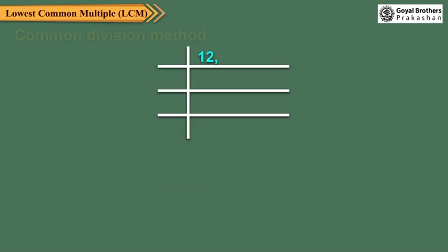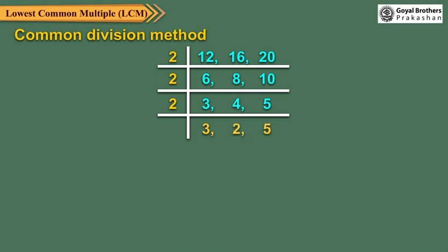Let us now find the LCM of 12, 16 and 20 by the common division method. In this method, we follow these steps. Step 1: Divide by the smallest prime number which can divide at least one of the numbers and bring down the numbers that cannot be divided. Step 2: Continue division by the smallest possible prime numbers till the last row contains prime numbers or co-prime numbers. Step 3: Multiply all the factors and the numbers in the last row to get the LCM.